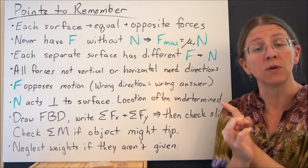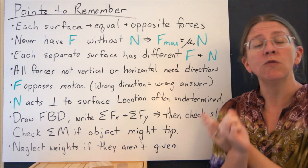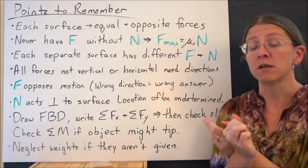After you've got that done, try to figure out where slip is going to occur. Write f equals mu n for the places where slip occurs, and then solve your problems.